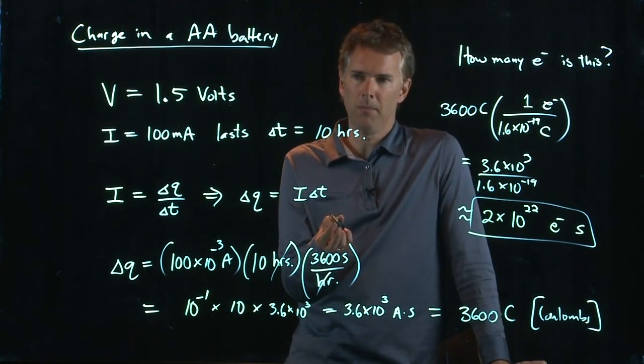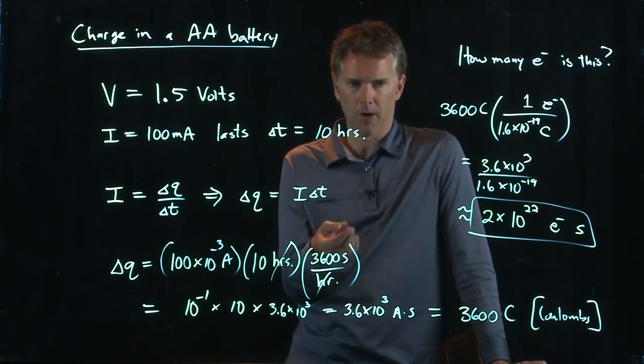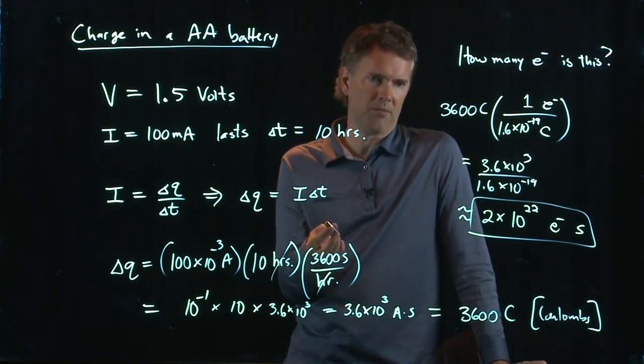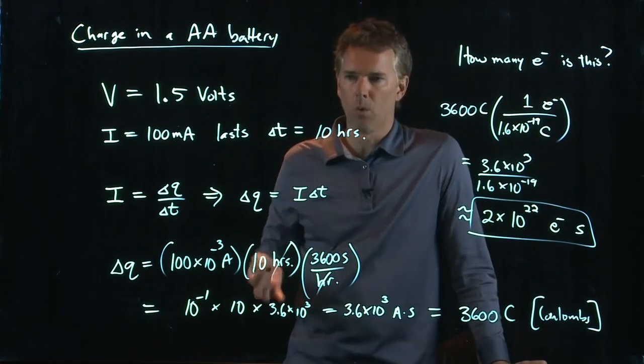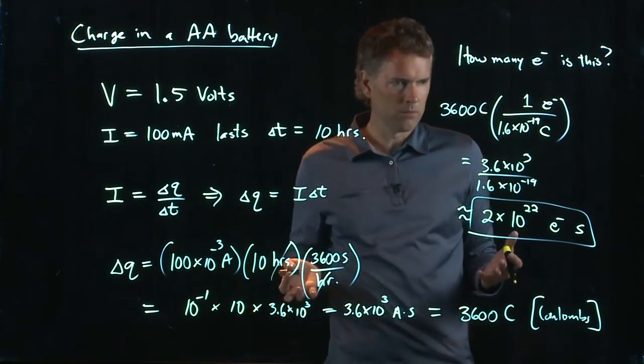Shouldn't scare you, though, right? Because we've talked about big numbers before. Avogadro's number is 6.02 times 10 to the 23, right? So this is on the order of that, which sounds reasonable.